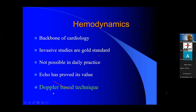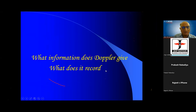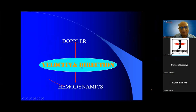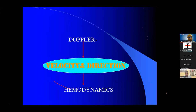Now, what information does Doppler give and what does it record? Doppler records velocities. The blood flows with a certain velocity in the system. If there is no velocity, the blood will not flow — that means the patient is dead. Whether it is a chamber or a blood vessel, blood has to flow with a velocity and in a certain direction. This velocity is converted into hemodynamics. You have to take a good velocity — Doppler records velocities and this velocity is converted into hemodynamics.